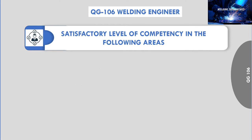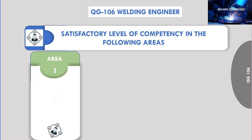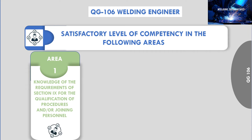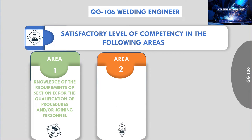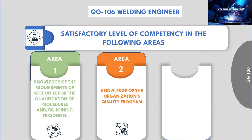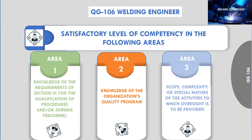The welding engineer shall have a satisfactory level of competence in the following areas. Area 1: knowledge of the requirements of Section 9 for the qualification of procedures and/or joining personnel. Area 2: knowledge of the organization's quality program. Area 3: scope, complexity, or special nature of the activities to which oversight is to be provided.